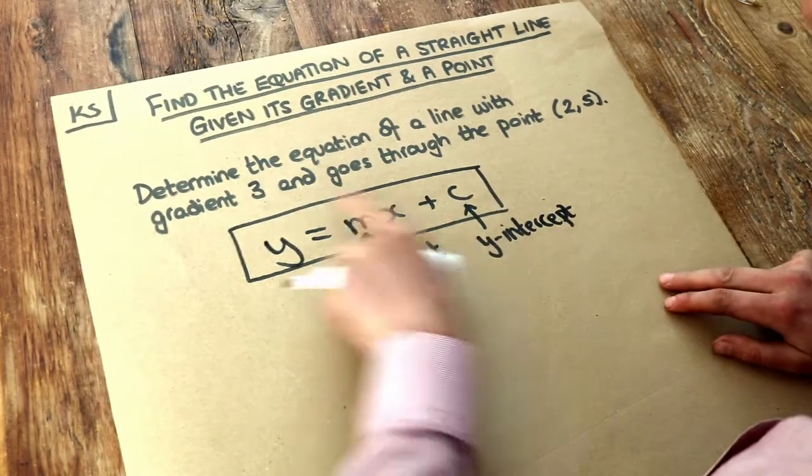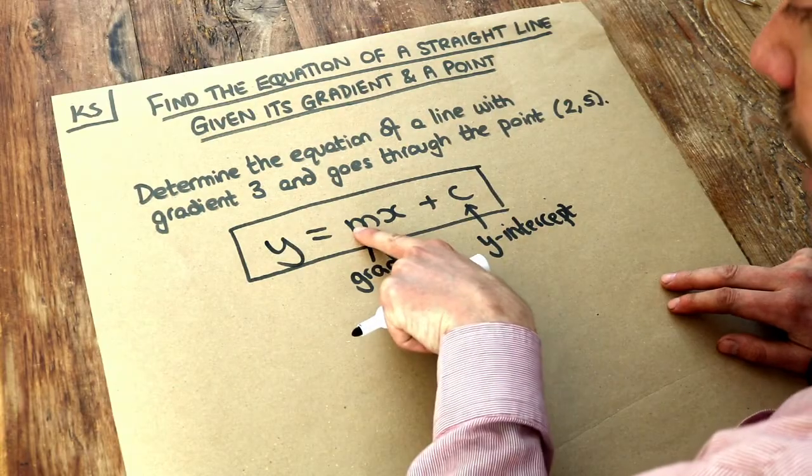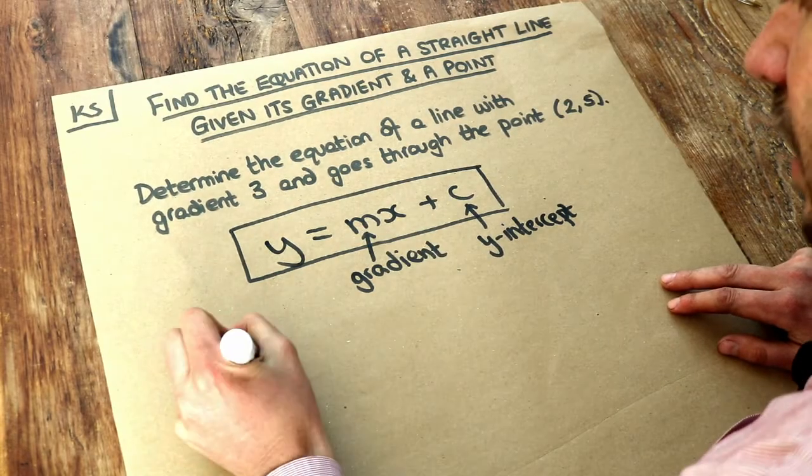Now we're told the gradient is 3 of this line, so we know the m is 3. So let's write that down, m equals 3.